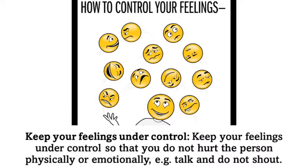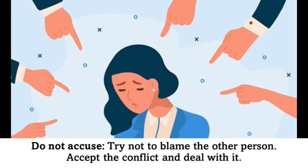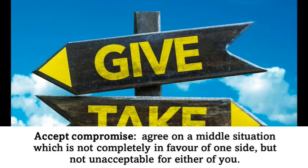Next is keeping your emotions and feelings under control — meaning you do not hurt the other person physically or emotionally. Talk and do not shout. Next, do not accuse or blame the other person. Accept the conflict and deal with it. Accept compromise — agree on a middle ground that is not completely in favor of one side.